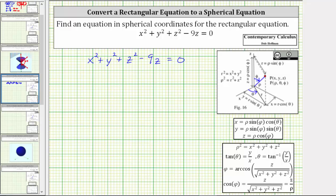Looking at the equations below, notice here we have rho squared equals x squared plus y squared plus z squared. You can use this equation here and perform a substitution for x squared plus y squared plus z squared.